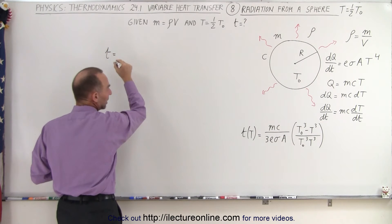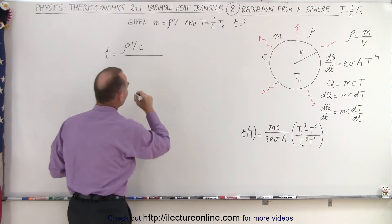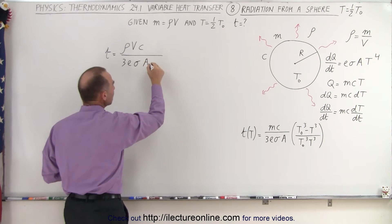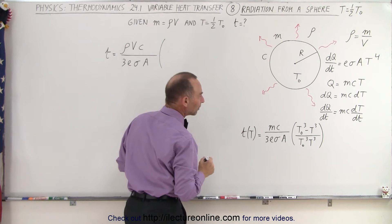So the temperature is now going to be equal to density times volume times a specific heat constant, divided by 3Eσ A, and then here we're going to replace every T by T sub-naught over 2.